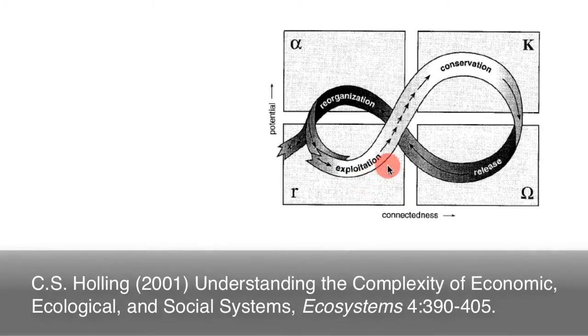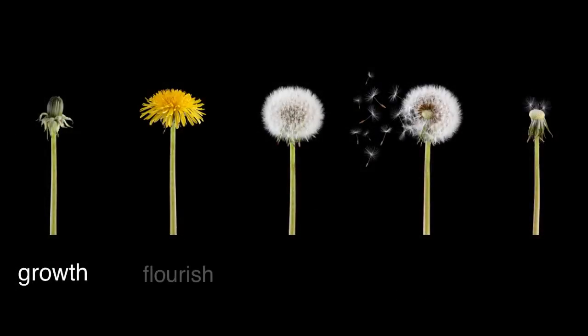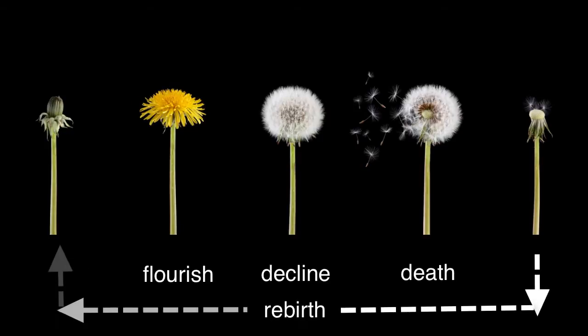Natural ecosystems, without the disturbance of humans, go through cycles, as does each organism: birth, growth, flourishing, decline, death and rebirth.